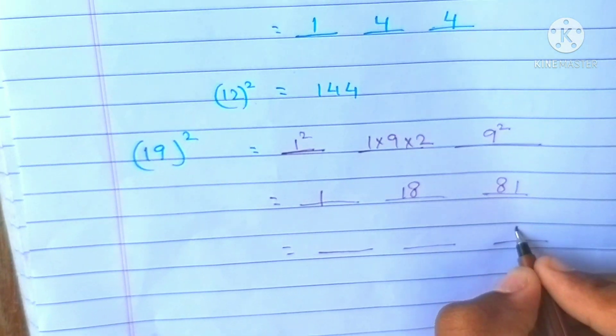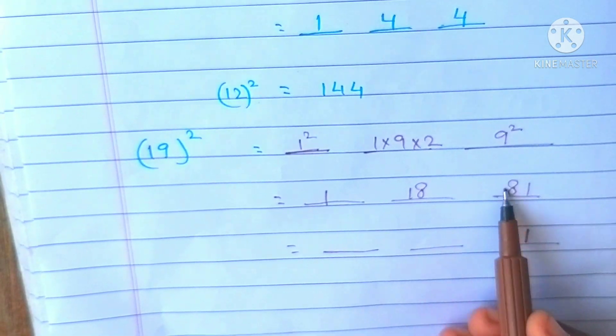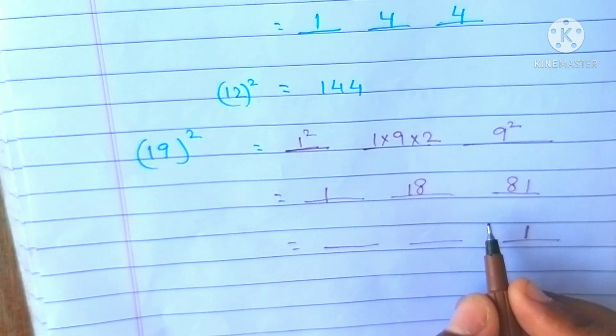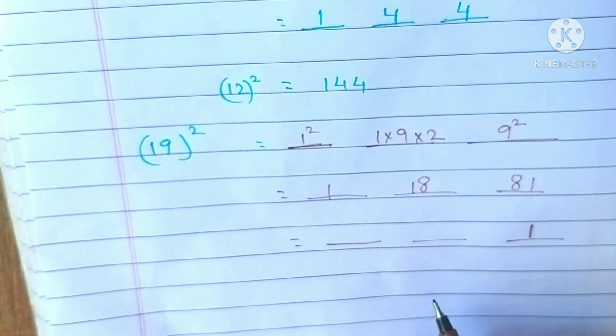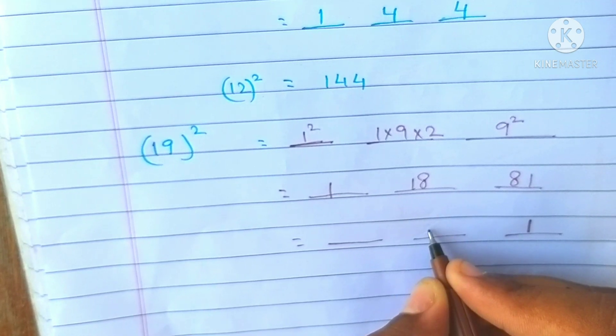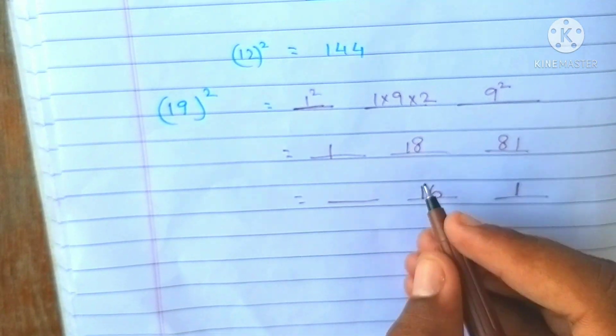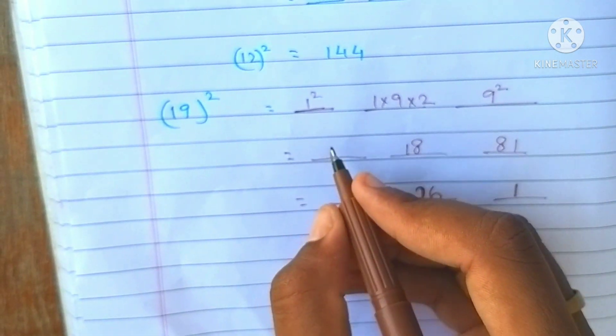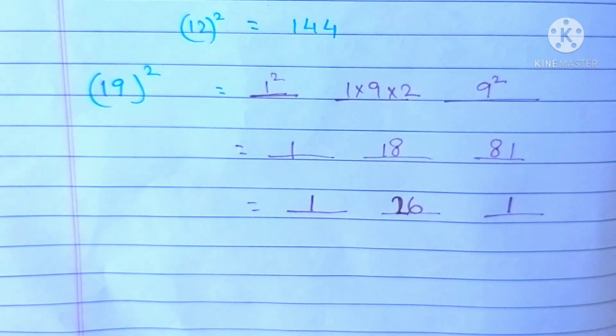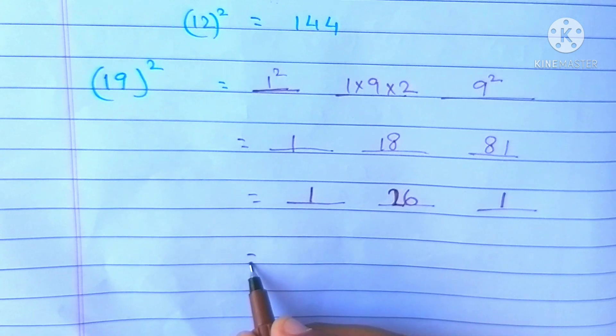Here, I keep 1. The leftover number is added to the next number. 8 plus 8 is 16. 18 plus 8 is 26, and 1.